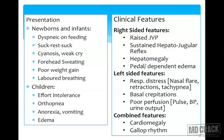Children usually present with effort intolerance, orthopnea, anorexia, and vomiting. Many times they have symptoms localizing to the abdomen, and only after getting a chest X-ray for abdominal complaints do we find cardiomegaly. Features of right-sided failure include raised JVP, sustained hepatojugular reflex, hepatomegaly, pedal edema, and dependent part edema. In infants not yet walking, pedal edema may not appear early, but pitting edema can be found over the sacrum, back of the head, or occiput. Left-sided failure presents with respiratory distress, basal crepitations, poor pulse pressure, and reduced urinary output. Combined features include a gallop rhythm and cardiomegaly.